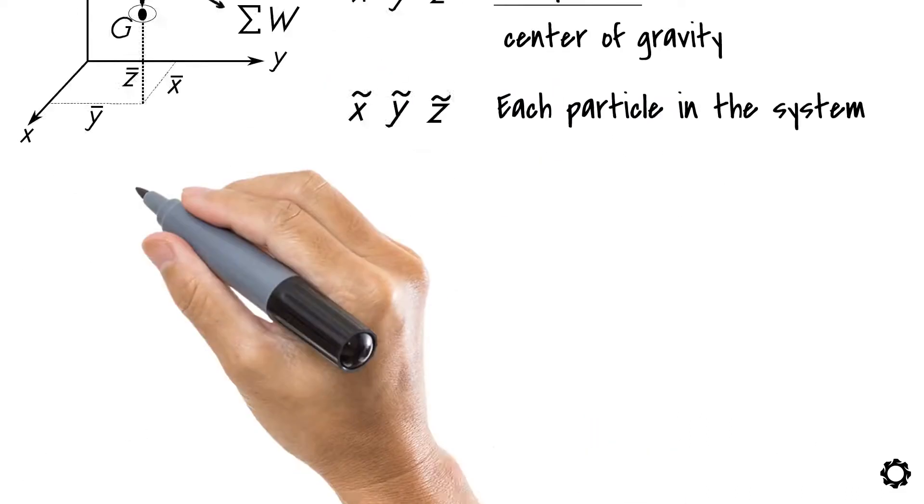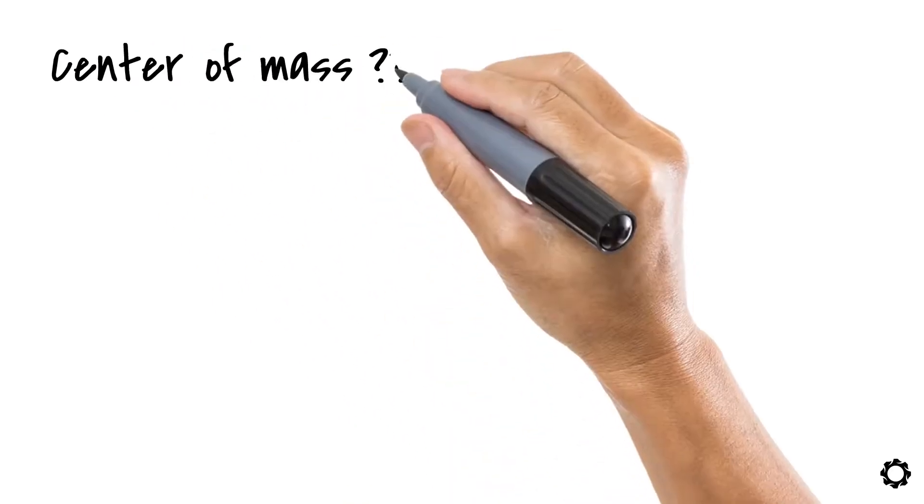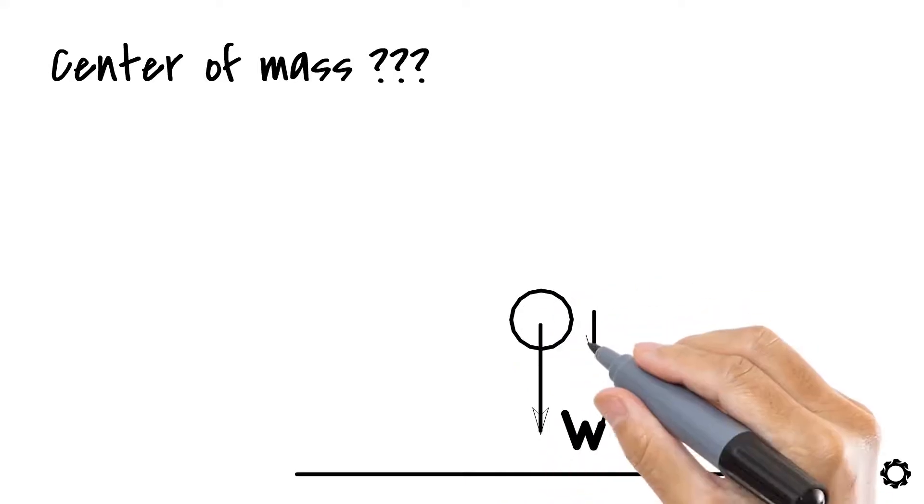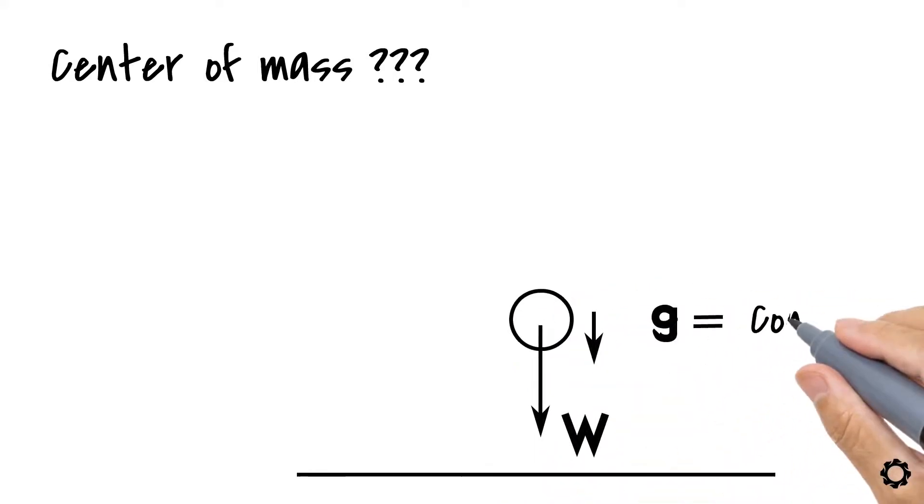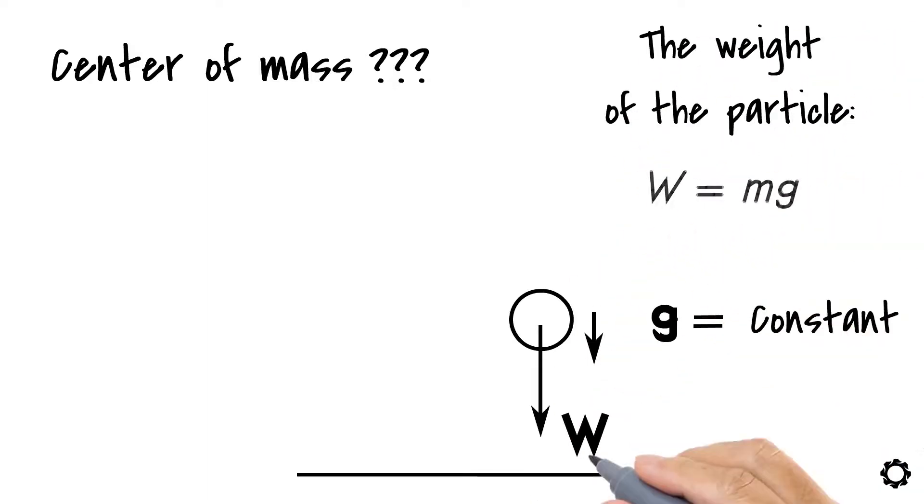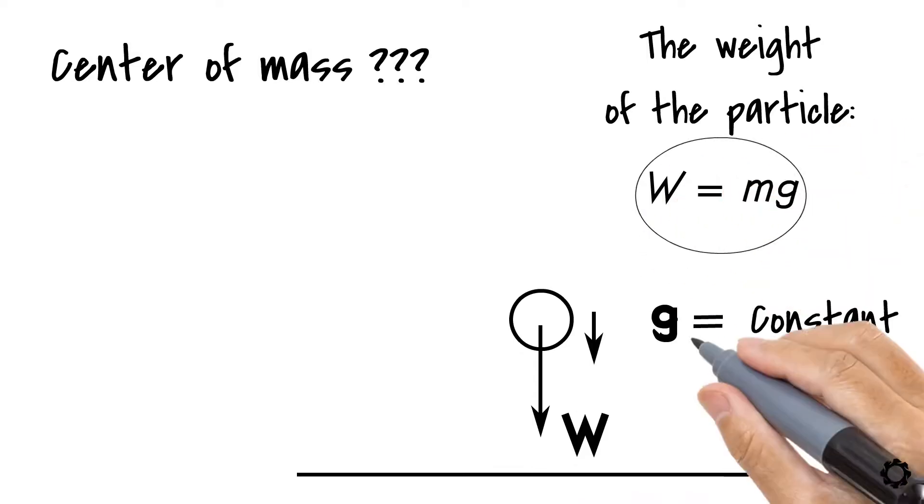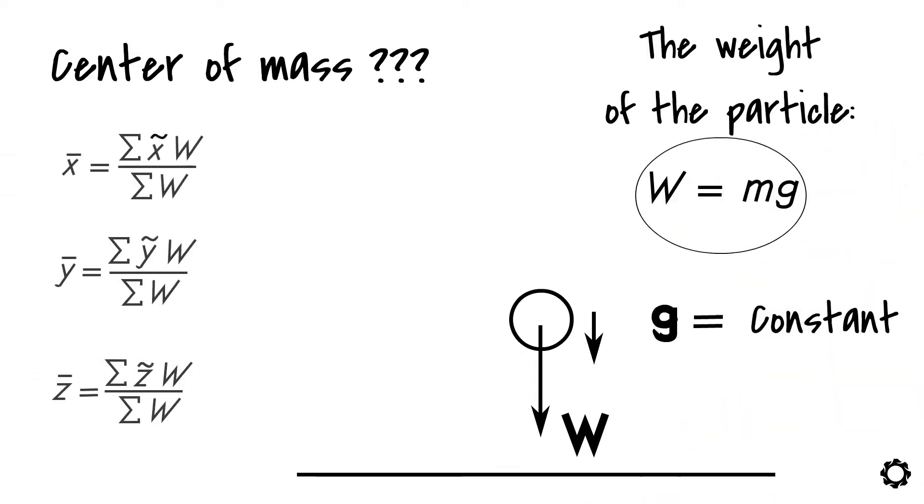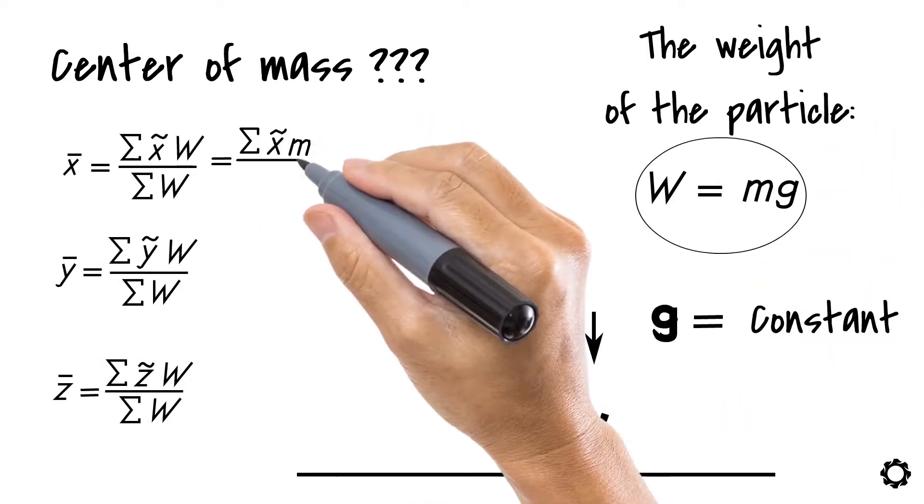Some of you may ask, how about the center of mass? How can we determine that? Well, it's pretty simple if you assume that the acceleration due to gravity, G, for every particle is constant, which yields the weight of the particle to be W equals M times G. By substituting this into the equations that we just defined, the equations will be simplified into the following forms.